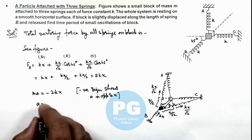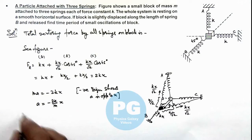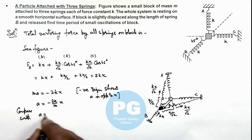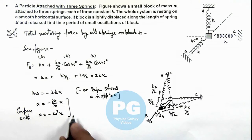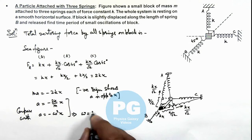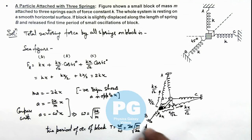The restoring acceleration we're getting is a = -(2k/m)x. We can compare this with a = -ω²x, which is the relation for acceleration in SHM. This gives us the angular frequency of oscillation to be ω = √(2k/m), and this gives us the time period of oscillation of the block as T = 2π/ω = 2π√(m/2k). That will be the final result of this problem.